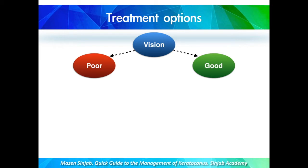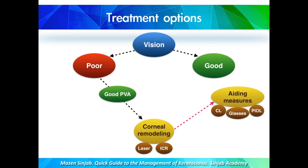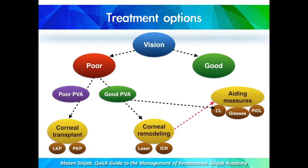When vision is poor, we need to assess whether the potential visual acuity is good or not. If potential visual acuity is good, we go to corneal remodeling to improve corneal irregularities by laser or intracorneal rings, then proceed to aiding measures — or in some cases, go immediately to contact lenses. If potential visual acuity is also poor, we must go for corneal transplant, which includes lamellar or penetrating keratoplasty, followed later by corneal remodeling and then aiding measures.